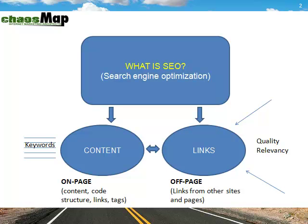Before we dig in, just a quick slide on what is SEO — search engine optimization. On this graph, I point to content and links, very central, right smack in the middle. On the left side, keywords to the page, content — we call this on-page. Content, the code behind the scenes, the structure, the overall information architecture, navigation, the links, the tagging. And to the right, the links, the off-page factors — links from other sites back to you. Those are the incoming arrows there.